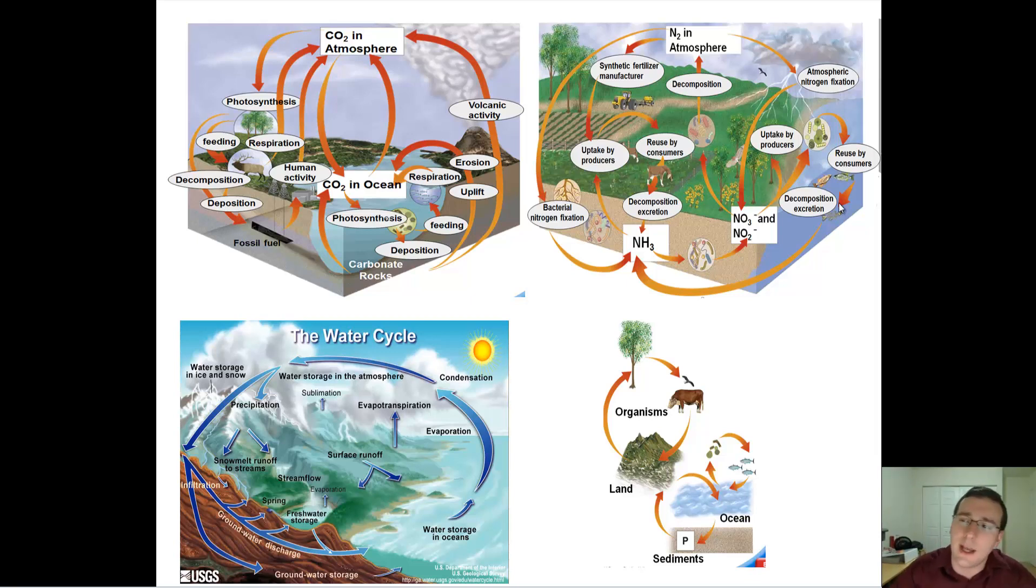For carbon dioxide, the majority of the carbon is going to be located in rocks. Carbonate rocks are going to be the most common place for carbon dioxide on Earth. But there's also a substantial amount of carbon dioxide in the water. The water holds more carbon dioxide than the air does, and there's of course carbon dioxide in the air.